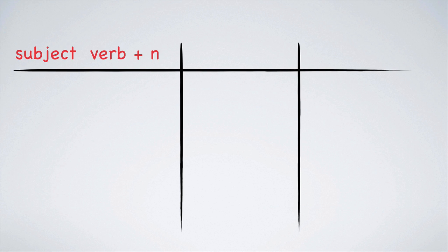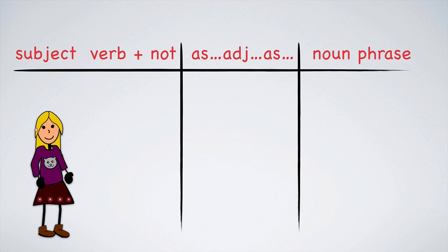All right, now let's take a look at comparisons of inequality. Remember, if you want to say that two things are not equal, you must use a negative sentence. The pattern is as follows: subject plus verb with the negative particle, followed by as adjective as, then we have the second noun phrase.